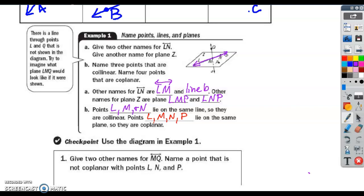Give two other names for line MQ. Name a point that is not coplanar with points L, N, and P. Any time we get to a checkpoint like this, my hope is that you stop the video, try it yourself, and then watch the answer and see how you did. Here we go: QM, same as MQ, or line a lowercase a. And then not coplanar, point Q.